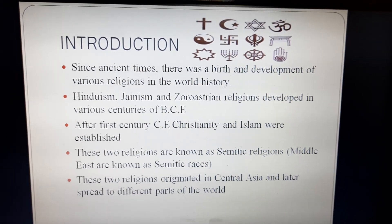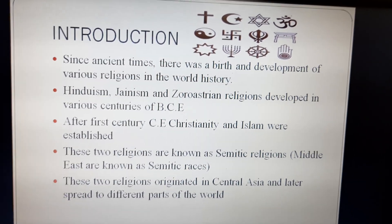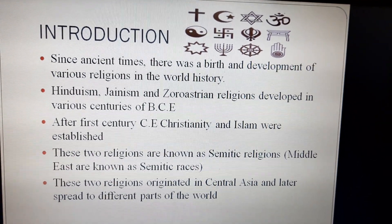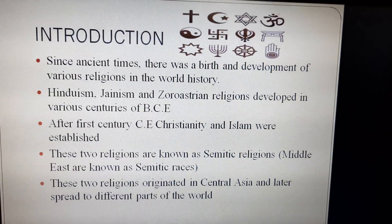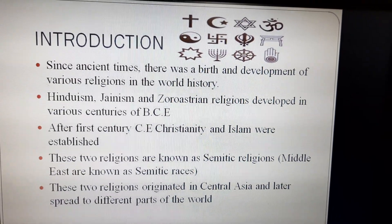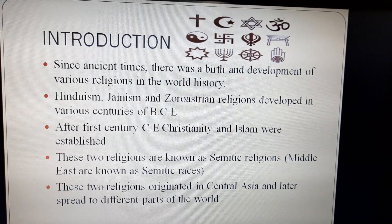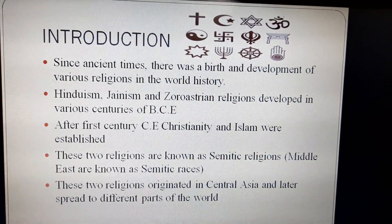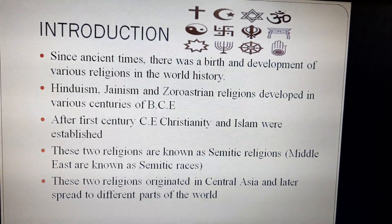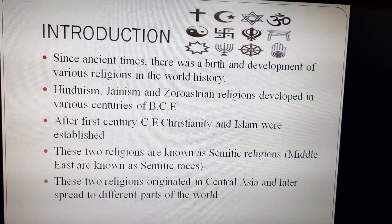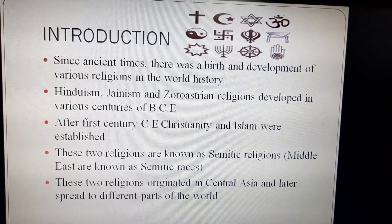Since ancient times, there was a birth and development of various religions in world history. There were a number of religions like Hinduism, Jainism, and Zoroastrian religions which developed in various centuries of BCE. BCE refers to Before Contemporary Era. After the first century, Christianity and Islam were the two new religions which were established.